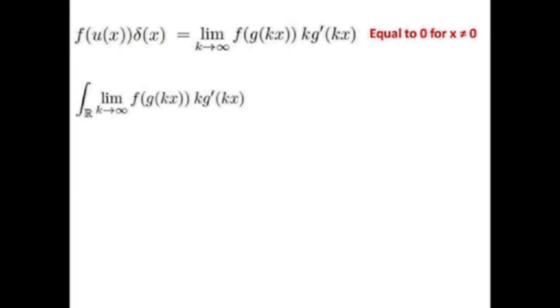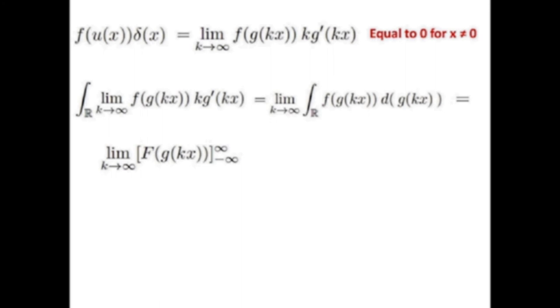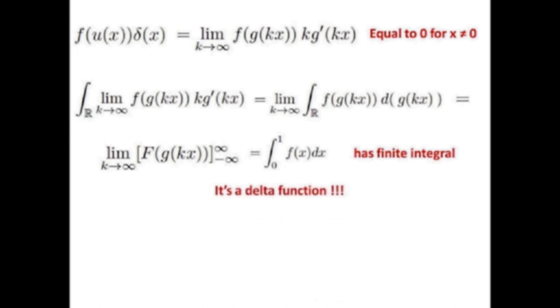We have a bit of calculus to do, exactly the same as before. The limit as k → ∞ goes to 0 for every x ≠ 0. If we evaluate the integral of the limit, it is composed of two terms, the second being the derivative of the argument of the f function. Once again the limit is independent from k, so we can drop it, since the limit of a constant function is the constant itself. We get that the result is the integral from 0 to 1 of f(x) dx.